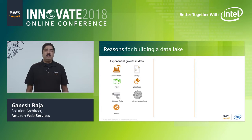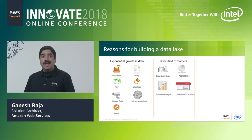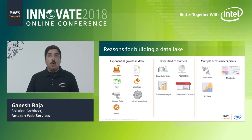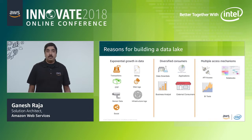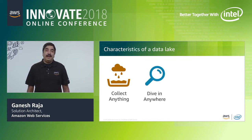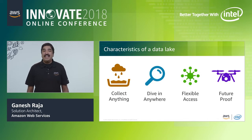Three main factors influence customers to move away from traditional approaches to building a data lake. There has been an exponential growth of data — not only transactional data, but also sensor data and social data. There is also a diversified customer base that needs access to the data, and these people don't have a single access mechanism. Each one requires a different tool to access the data. For example, business analysts need BI tools, and data scientists need notebooks. You should be able to collect anything into a data lake and give flexible access to the data. You also need to future-proof your data lake and not store your data in any proprietary system.